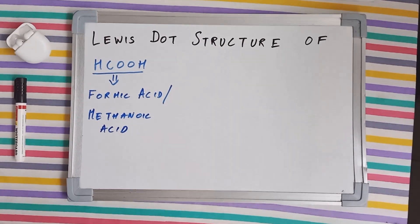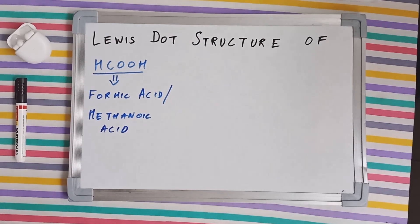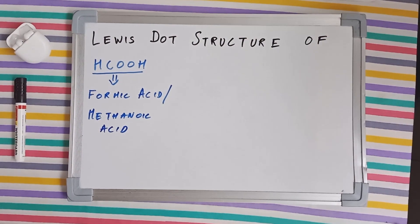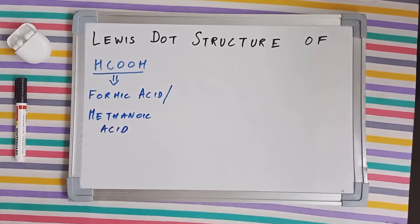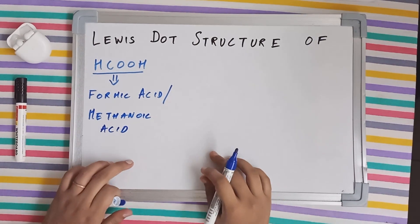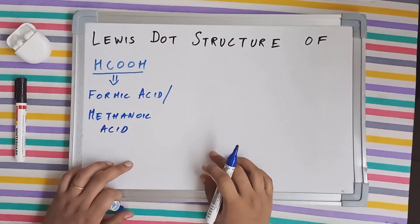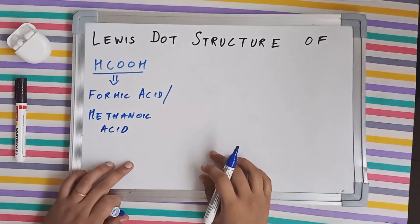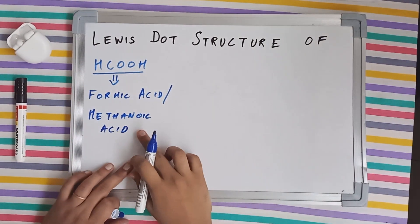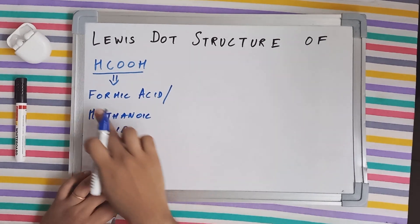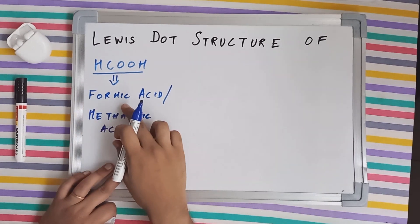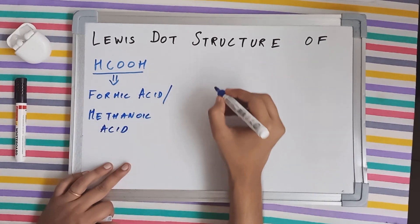Namaste everyone and welcome to Science Unfiltered. Today we'll be drawing the Lewis dot structure of HCOOH, which is known as formic acid, and by its IUPAC name it's called methanoic acid.